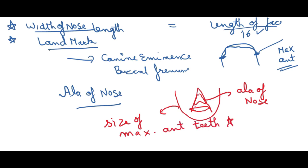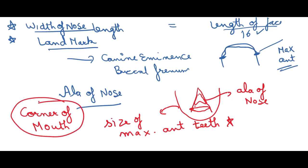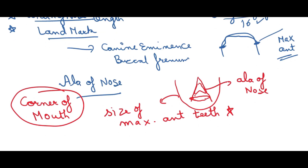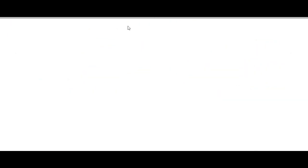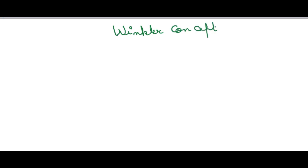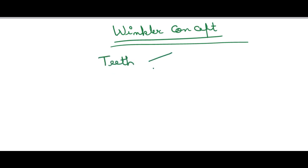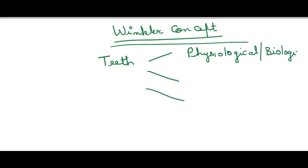The location of the corner of the mouth marks the distal end of the canine. Various theoretical concepts are also used in teeth selection. The Vinkler concept states that teeth should be selected based on three different views: physiological, psychological, and biomechanical.